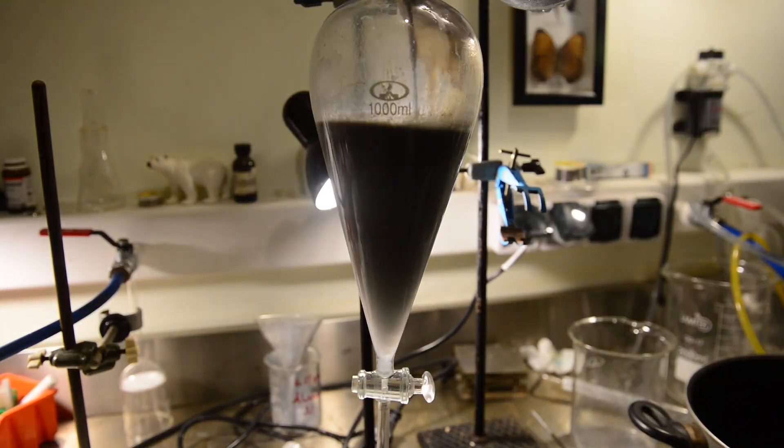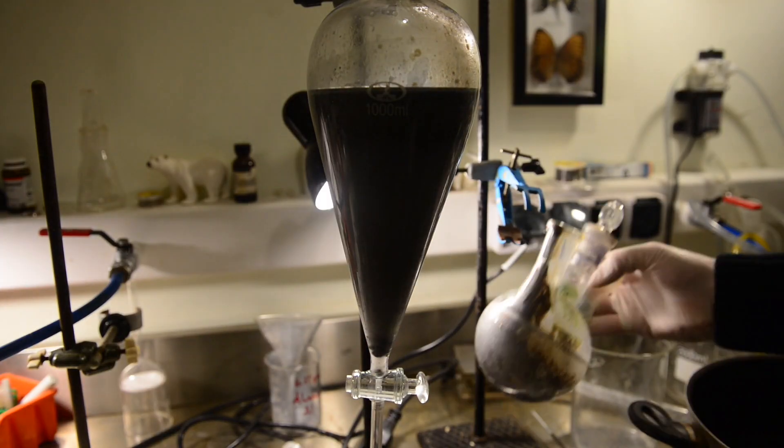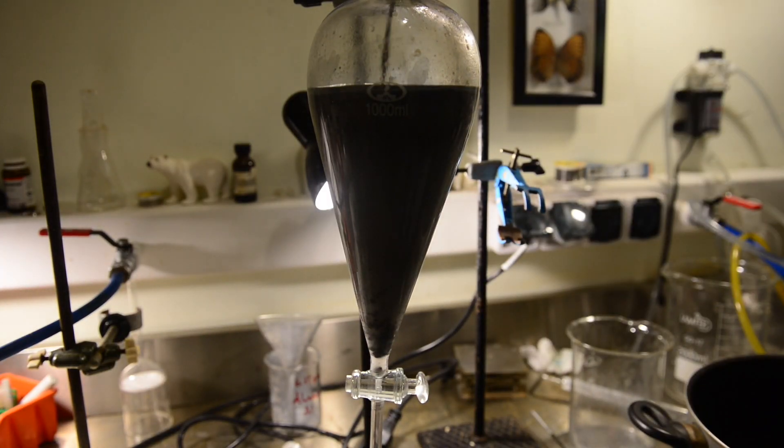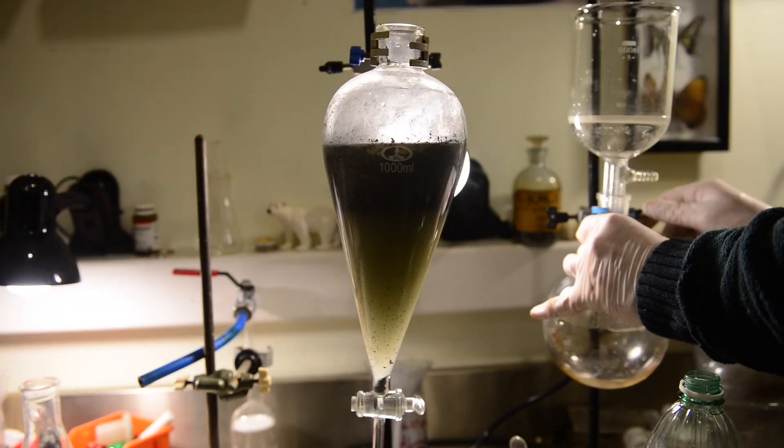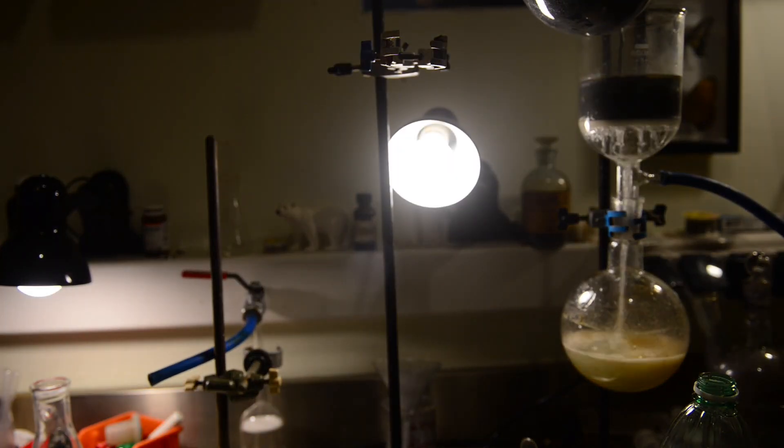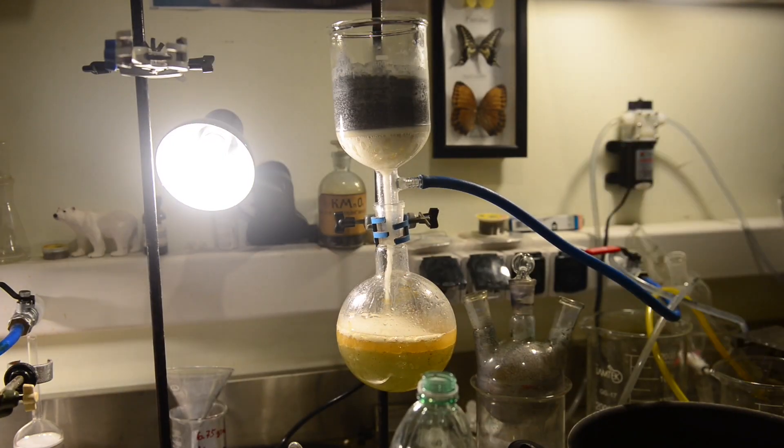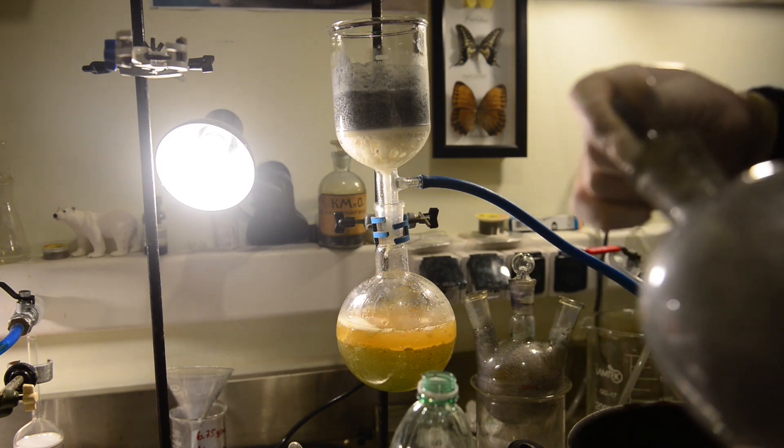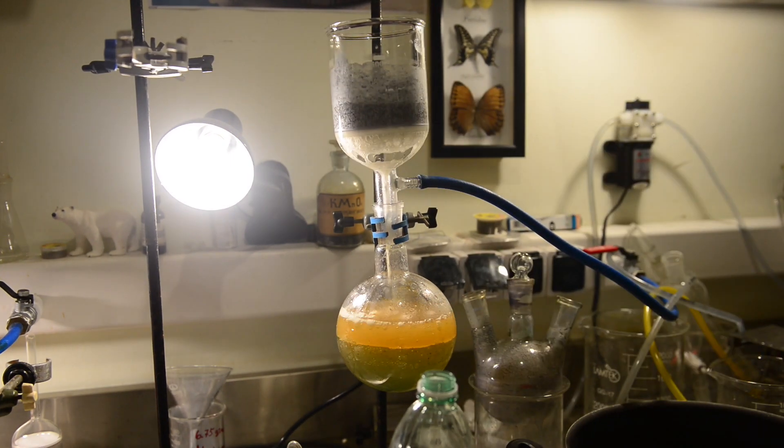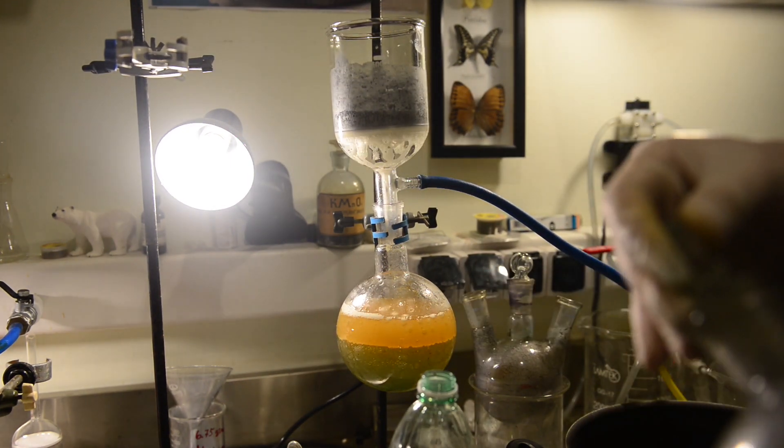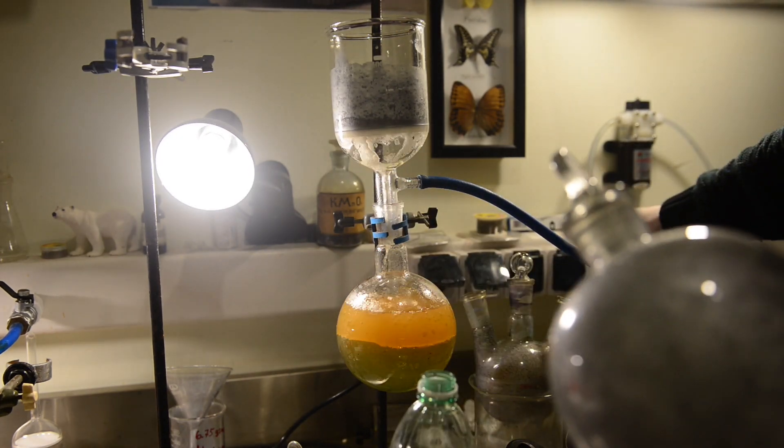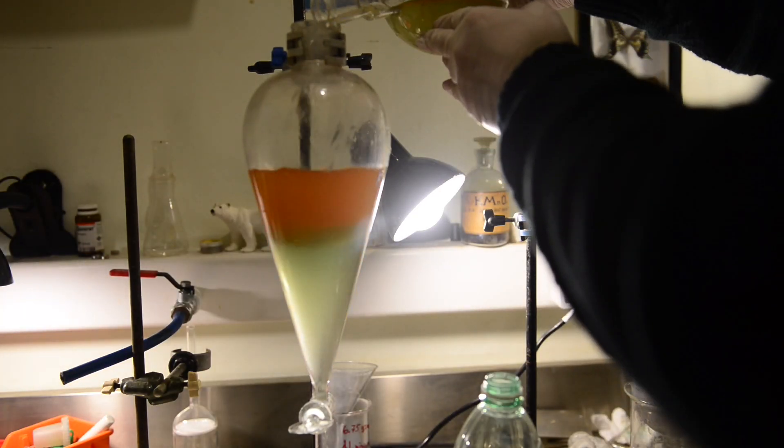Now I decant the whole beaker into the large separation funnel. But there are a lot of unreacted aluminum particles in the organic phase and I decided to filter it. I'm using vacuum filtration for this. The filtered solution is free of aluminum and phases separate in the filtration flask. I move filtrate to the separation funnel again.